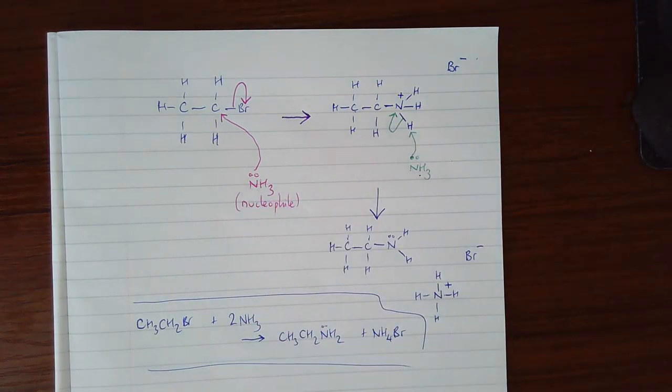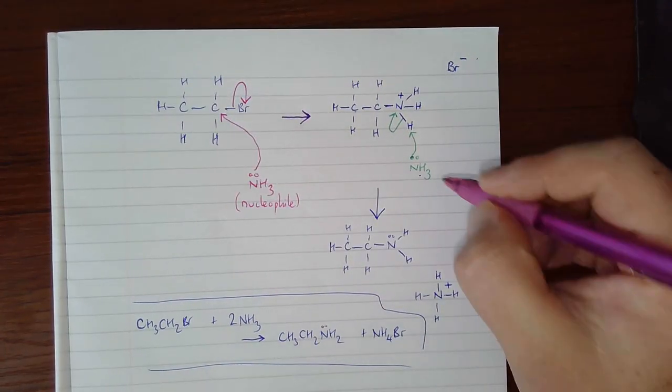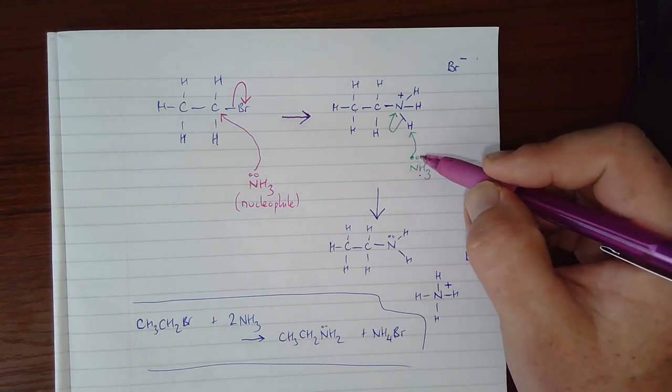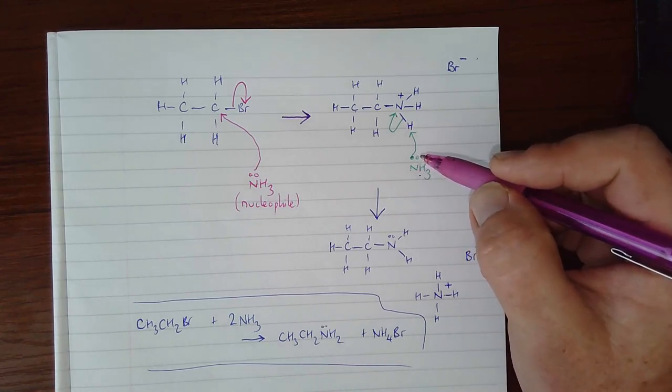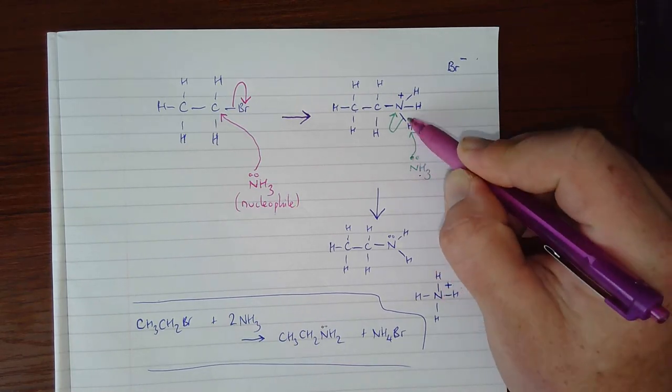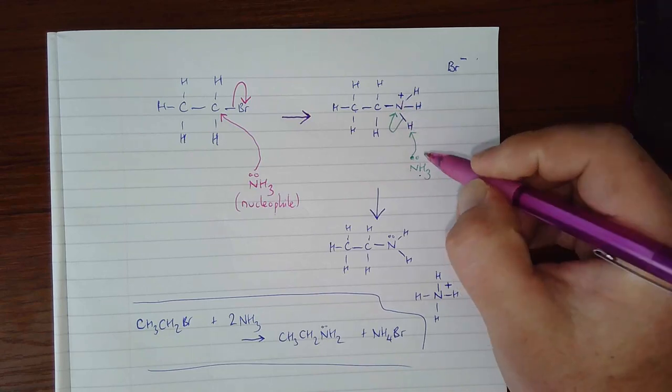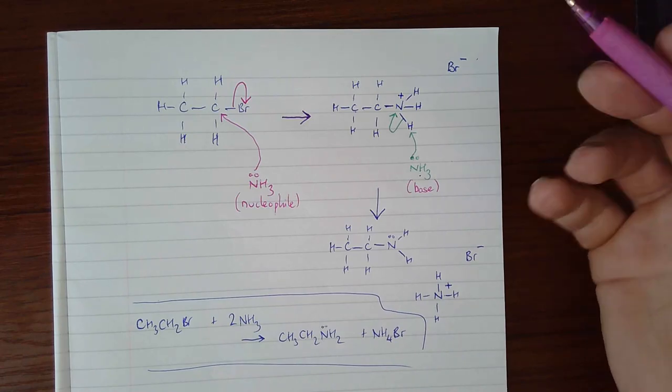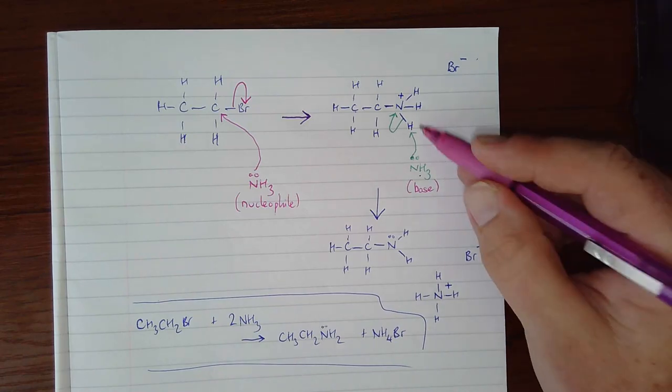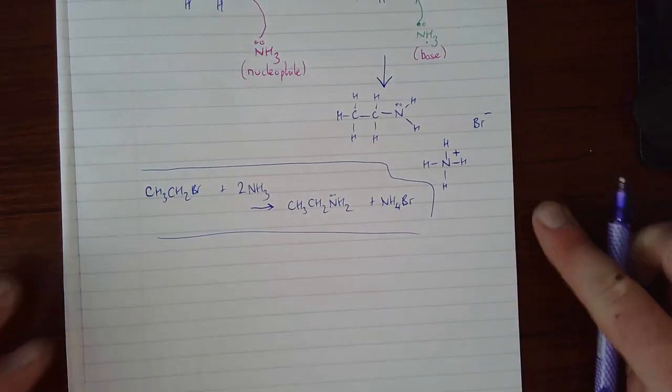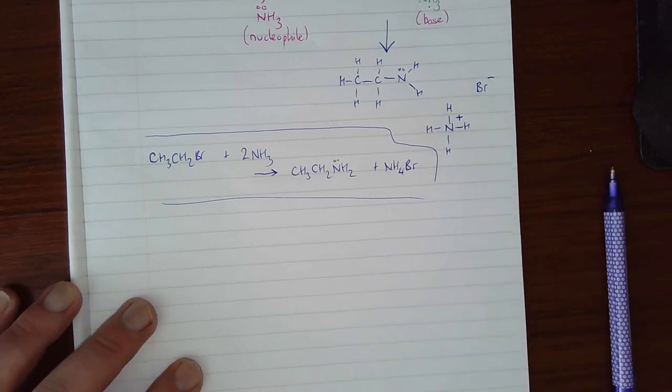One aside that should be made: we say this first ammonia acts as a nucleophile, an electron pair donor typically to a carbon. This second NH₃ is also acting as an electron pair donor, but because it's specifically taking a hydrogen and the hydrogen comes without any electrons, this is acting as a base. It's still an electron pair donor, but we don't call it a nucleophile because it's taking an H⁺ from something. So that's a Lowry-Brønsted base.